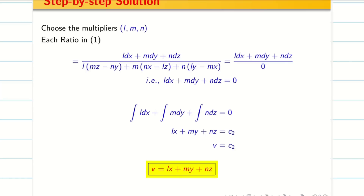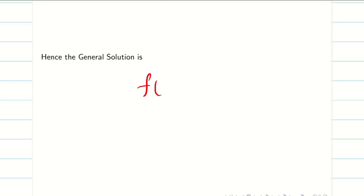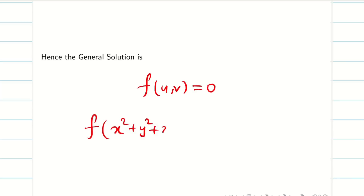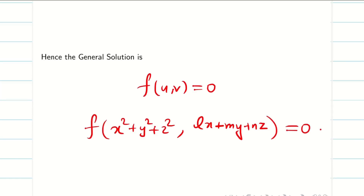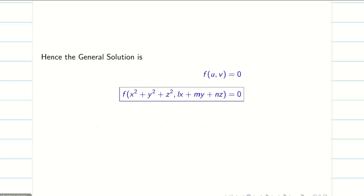So we have found U and V. Therefore the general solution is F(U, V) = 0, which gives F(X² + Y² + Z², LX + MY + NZ) = 0. This is the general solution. Hope you understand.